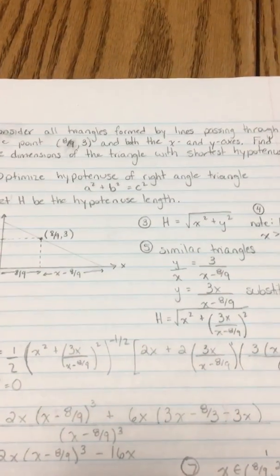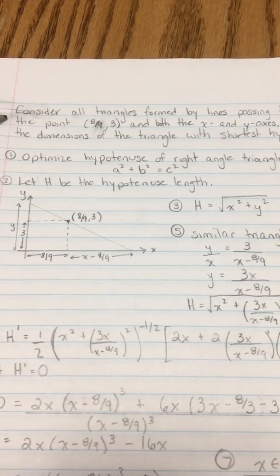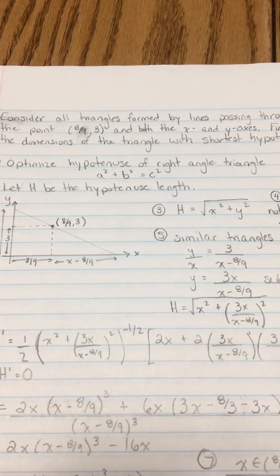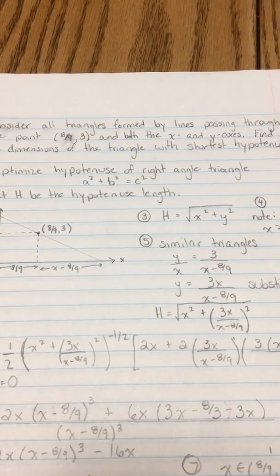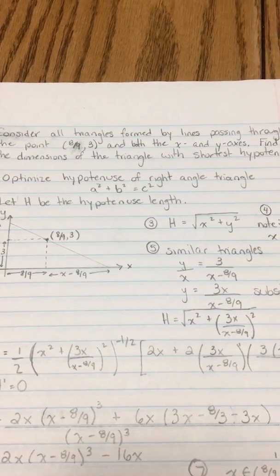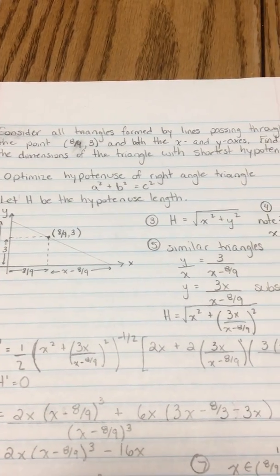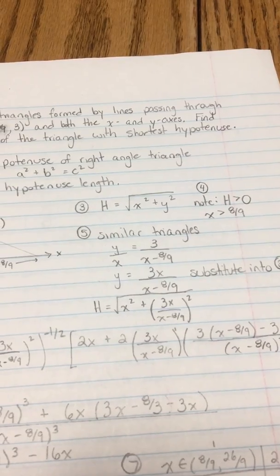We need to consider all triangles formed by lines passing through the point (8/9, 3) and both the x and y axes. The question is asking us to find the dimensions of the triangle with the shortest hypotenuse.